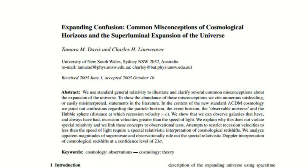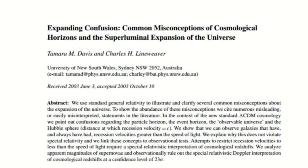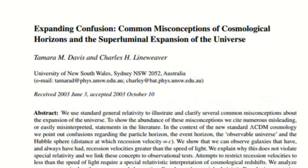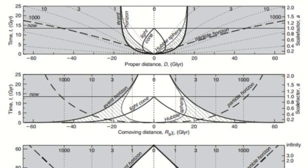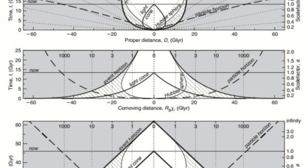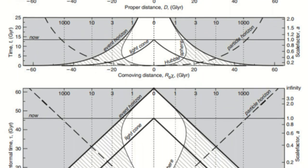Two years later, Davis and Lineweaver published a paper in the publications of the Astronomical Society of Australia to clear up misconceptions in their original paper. They clarified that their calculations would not explain any kind of change in the speed of light that would be consistent with a young universe.